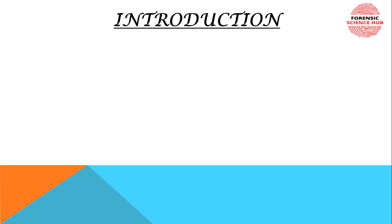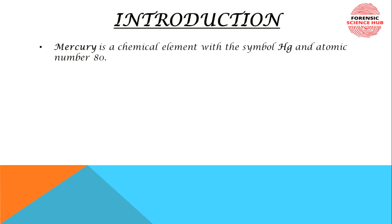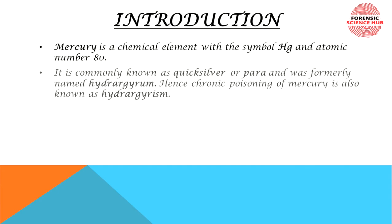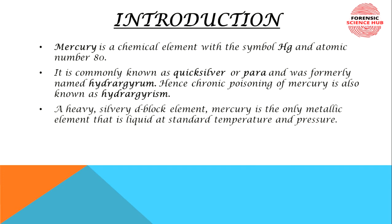Let's start with the introduction. Mercury is a chemical element — it is a metal, the symbol is Hg, and the atomic number is 80. Its common name is quicksilver or 'para,' and it was earlier known as hydrargyrum. Hence, if someone has chronic poisoning of mercury, that condition is known as hydrargyrism. It is heavy, silver colored, a d-block element.